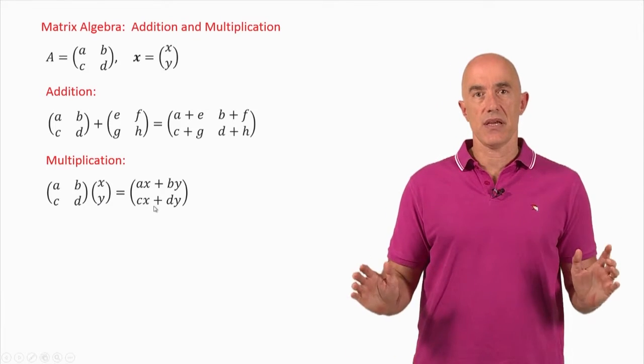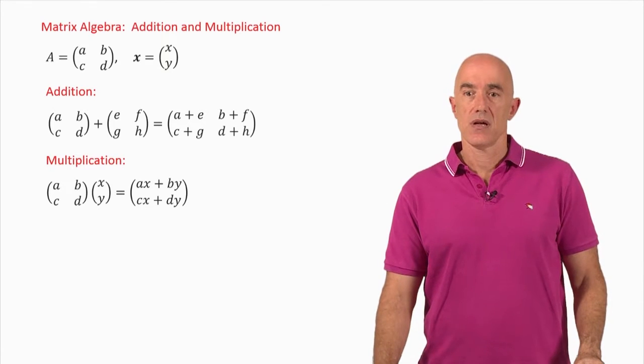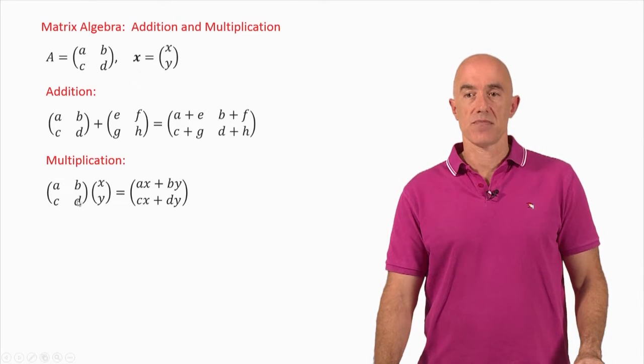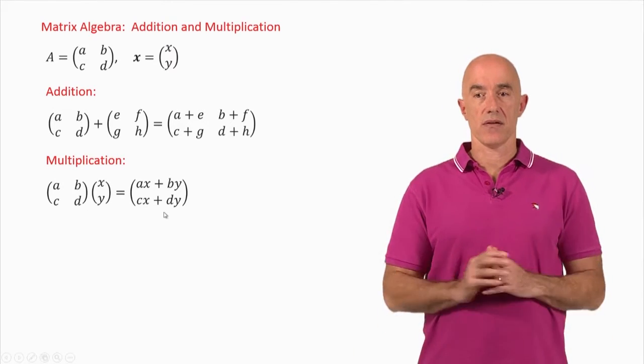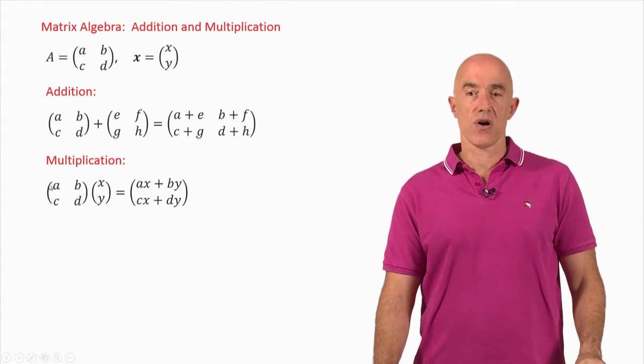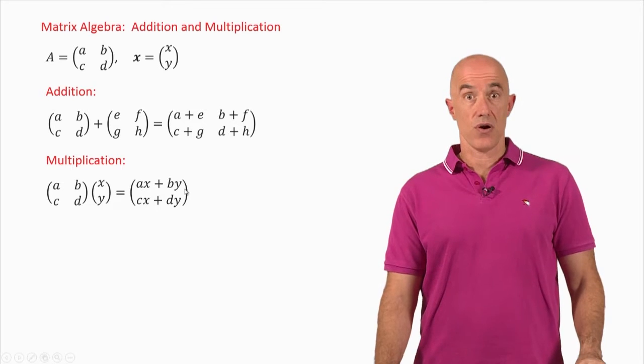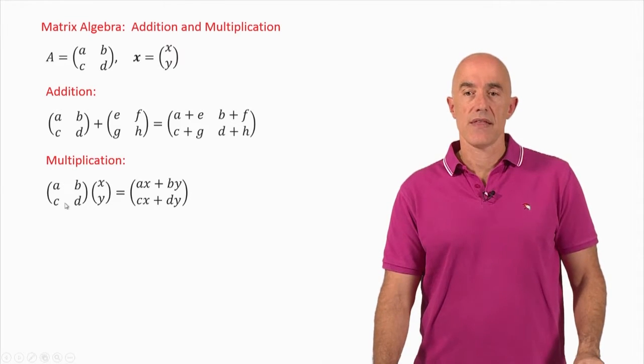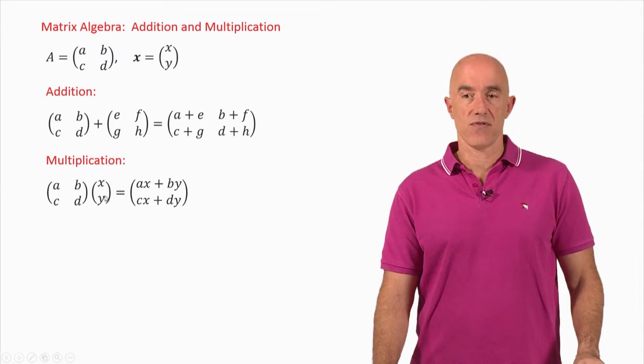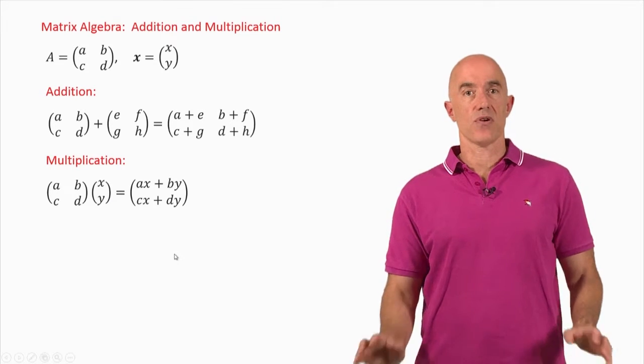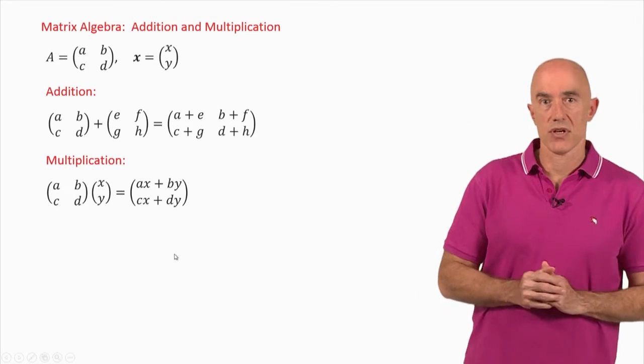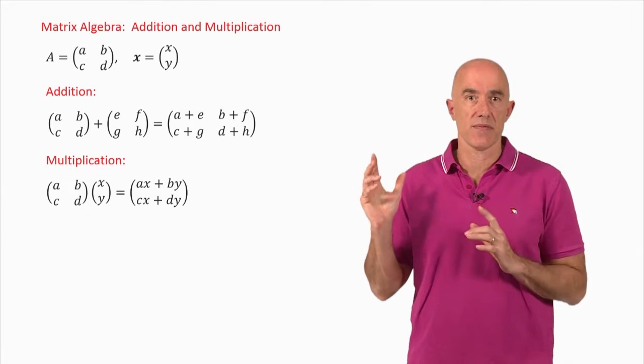And the second element here in the second row will be C times X plus D times Y. So the first row times the first column gives us the first row, first column. And the second row times the first column gives us the second row, first column. So that's a matrix times a vector.